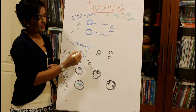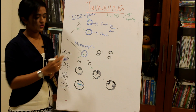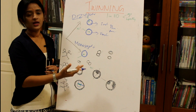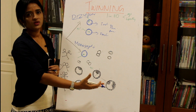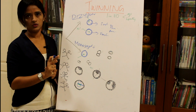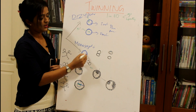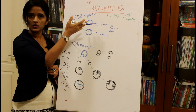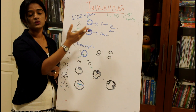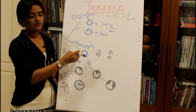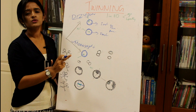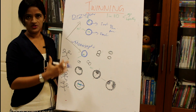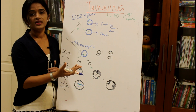In monozygotic twins, an oocyte is fertilized by a sperm to form a zygote. Whatever type of monozygotic twin we discuss, it is derived from a single zygote. In dizygotic twins, two separate zygotes are formed from two oocytes and two sperms, but in monozygotic twins, a single zygote is formed from a single oocyte and a single sperm.